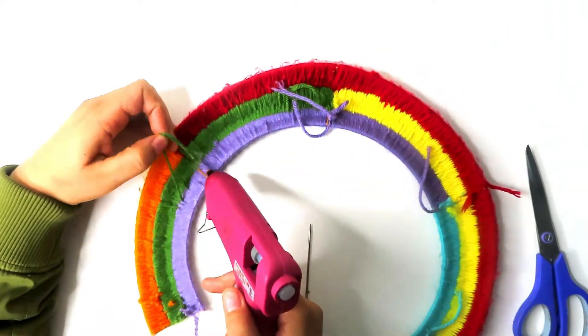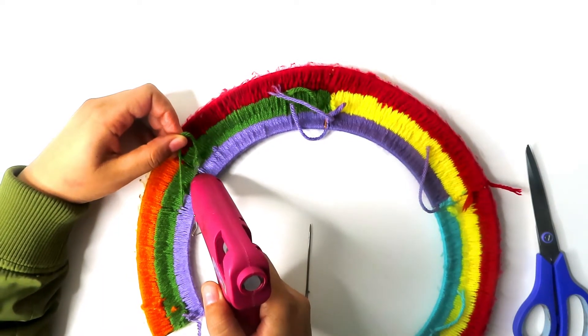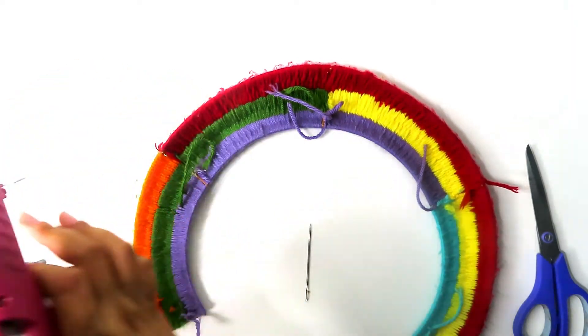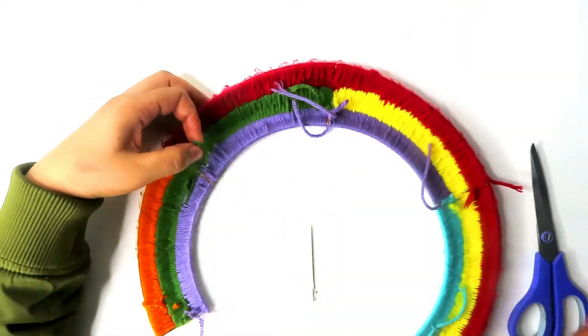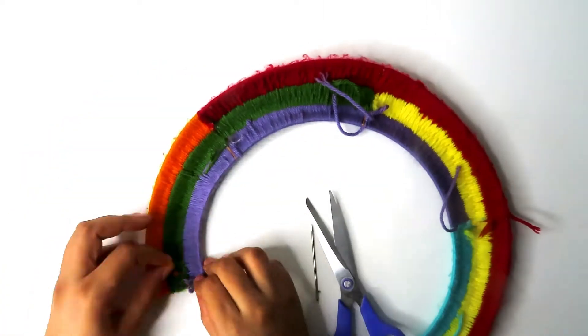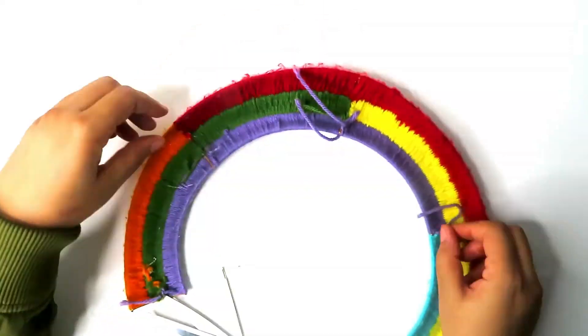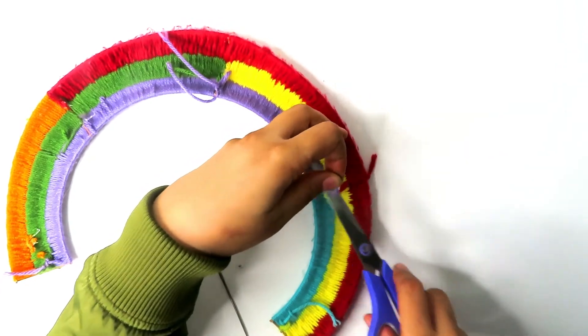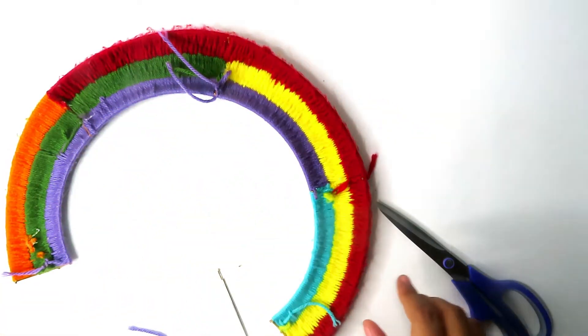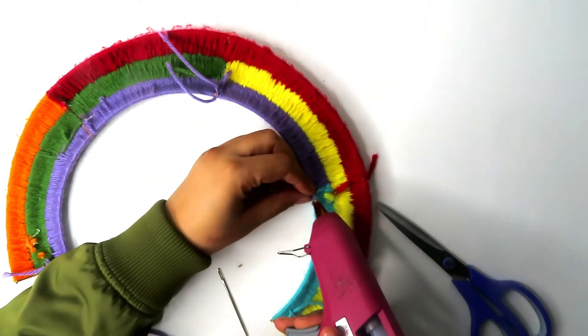Use a hot glue gun and a skewer to glue down any of the hanging strings on the back side of the rainbow. Grab your scissors and cut down any of the hanging strings that are longer than a half an inch.